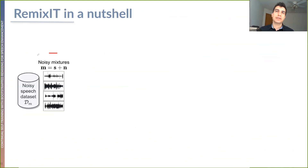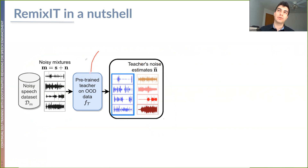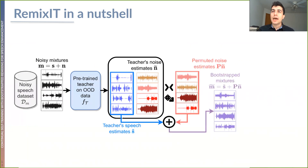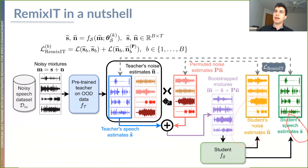Remixit in a nutshell starts from a noisy-speech dataset, where we grab a batch of mixtures and noise mixtures. We have a pre-trained teacher on some kind of out-of-domain data — could be MixIT or a supervised teacher on out-of-domain data — and we estimate the teacher's noise and speech estimates. We saw in our experiments that it's enough to keep the teacher frozen. We use the teacher speech estimates alongside the permuted noise estimates, take the noise estimates and permute them, generate new bootstrap mixtures by remixing them together, and feed those bootstrap mixtures to the student model, which estimates noise and speech estimates and uses the teacher's permuted sources as pseudo-targets.